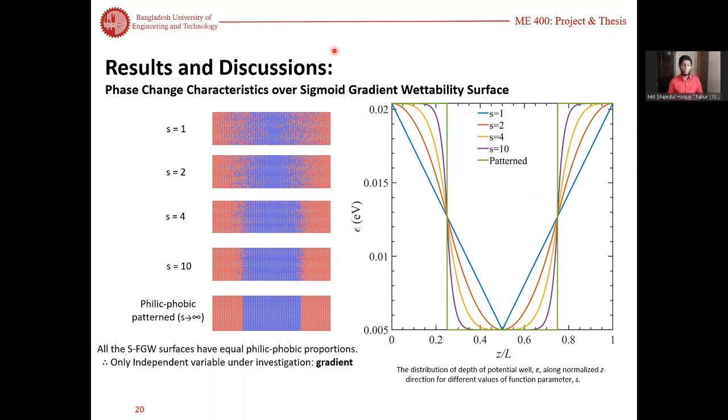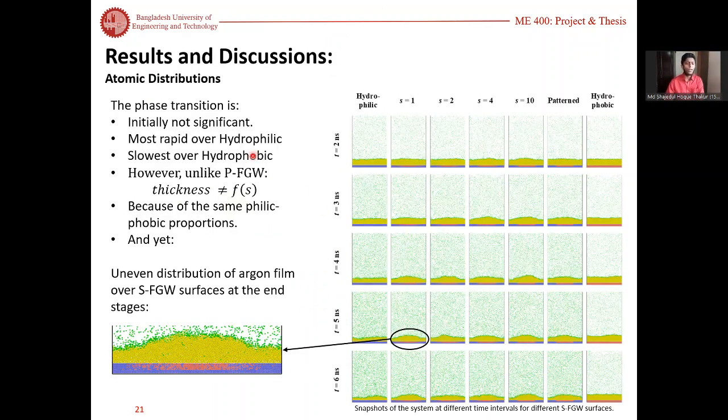We studied sigma gradient wettability surfaces because of a special characteristic of the sigma function that ensures equal proportions of hydrophilic and hydrophobic atoms throughout the entire surface regardless of the value of s, as we can see here. Yet the phase transition is the same as pFGW surface in the sense that it is initially most rapid for the hydrophilic and slowest for the hydrophobic.